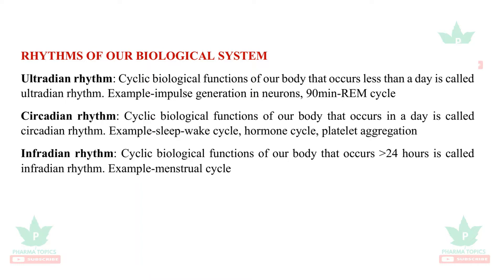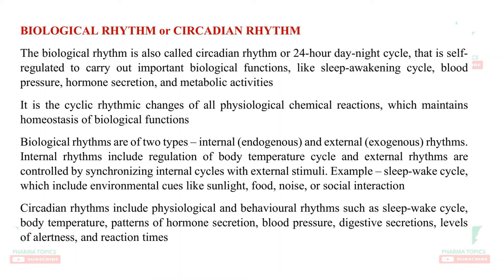Next is circadian rhythm — it is the cyclic biological functions of our body that occurs in 24 hours. Example: sleep-wake cycle, hormone cycle, platelet aggregation. Then infradian rhythm — these are cyclic biological functions of our body that occur greater than 24 hours. Example: menstrual cycle, which happens once in 28 days.